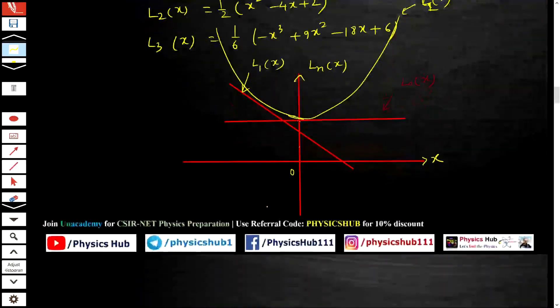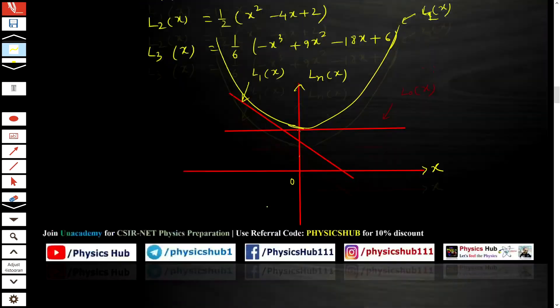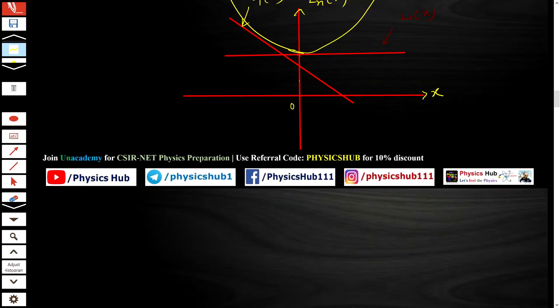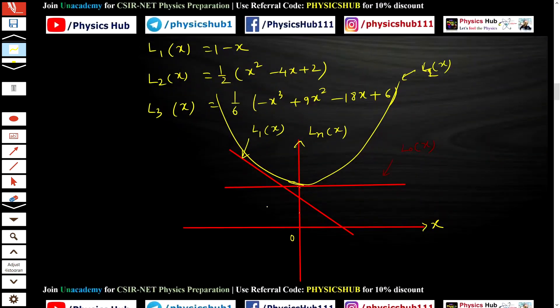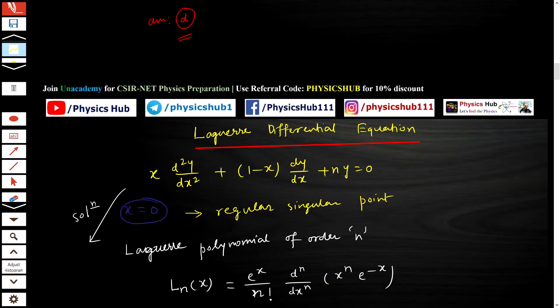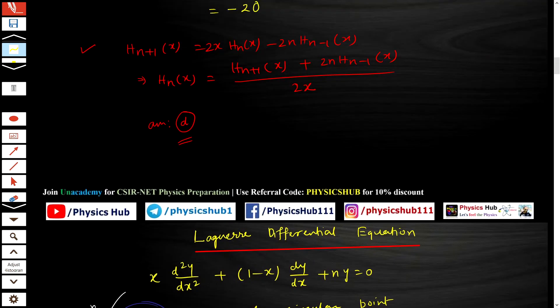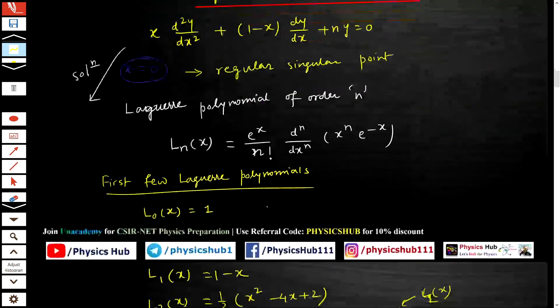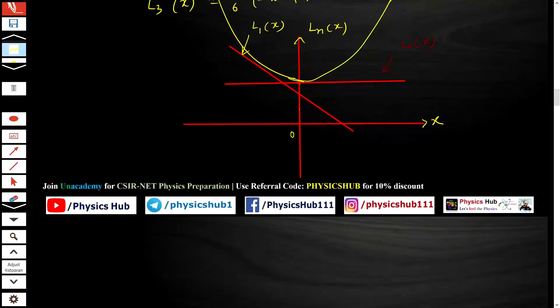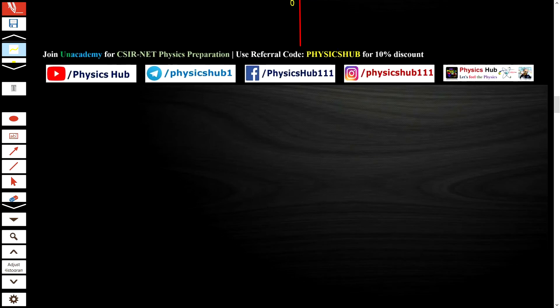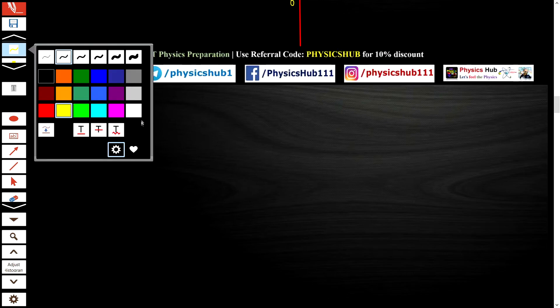This was the brief theory part of the Laguerre polynomial. We have to know a few more things. Whenever we study special functions, we need to know about the differential equation, its solution, and two more things: the generating function and the orthonormal or orthogonal property.